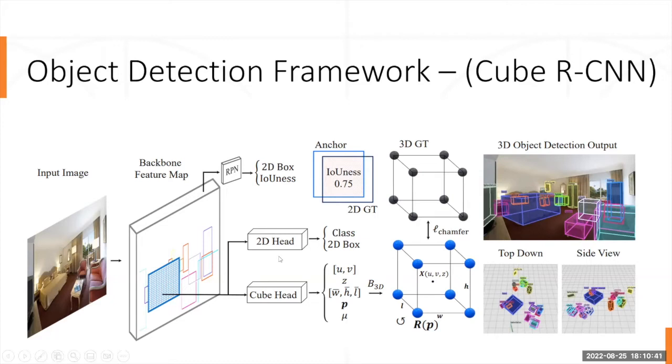After which we have a 3D cube head. This takes input from the backbone feature map and creates a 3D cuboid like the one in the image for the detected 2D objects. This is how the framework works.